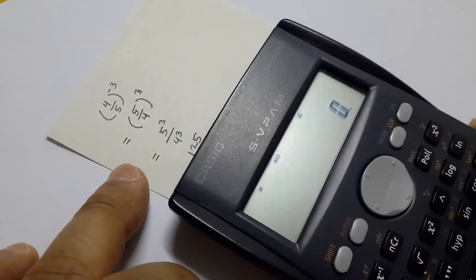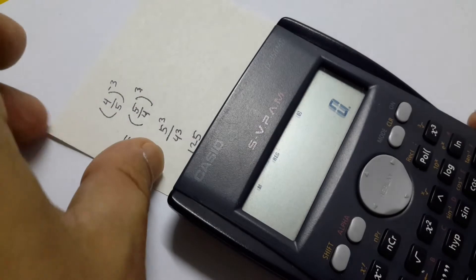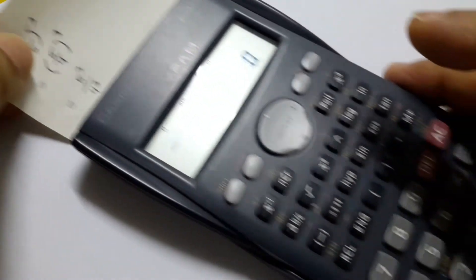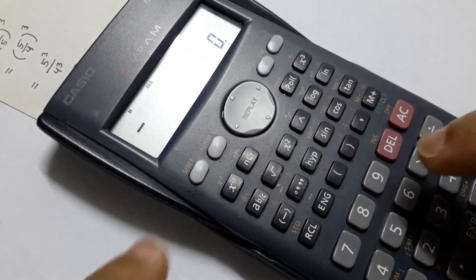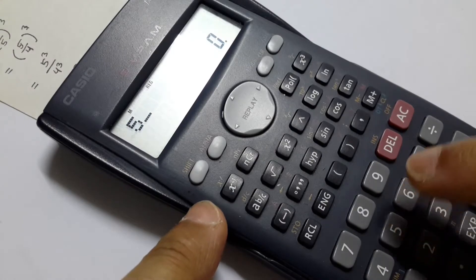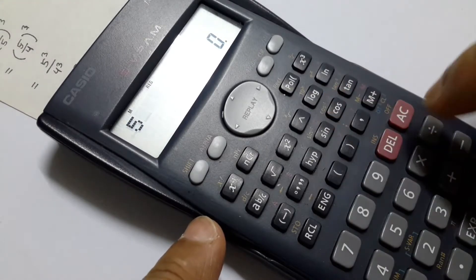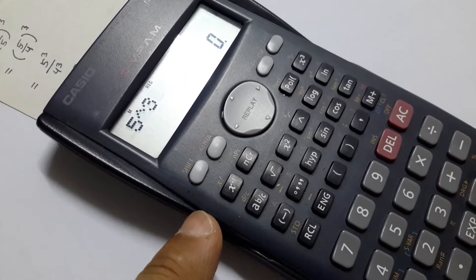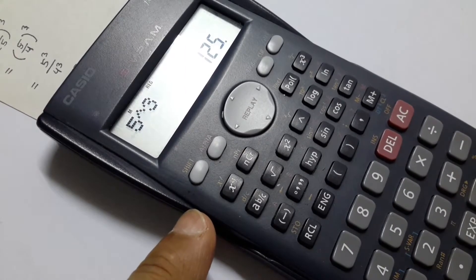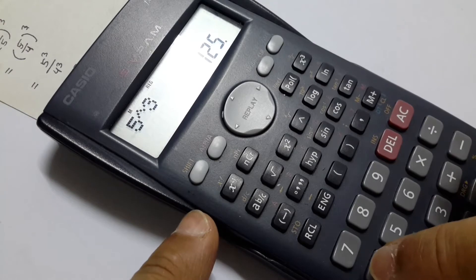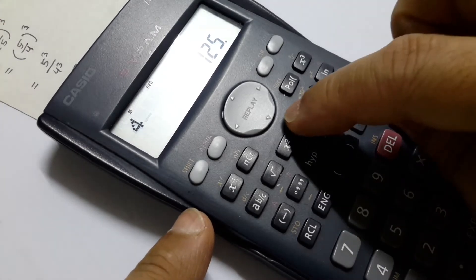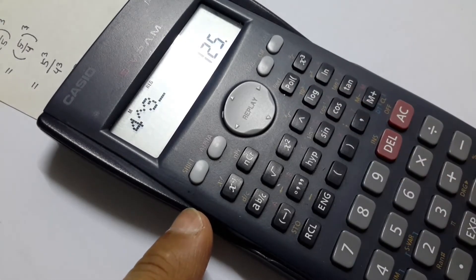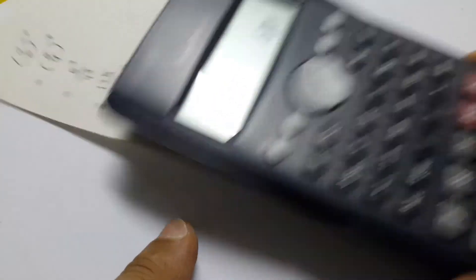At this step, what is 4 power 3? Yeah, what is 5 power 3? After that, here, exponent power 3: 5 power 3 equals 125, okay? 4 to the power 3 equals 64. So this is the answer.